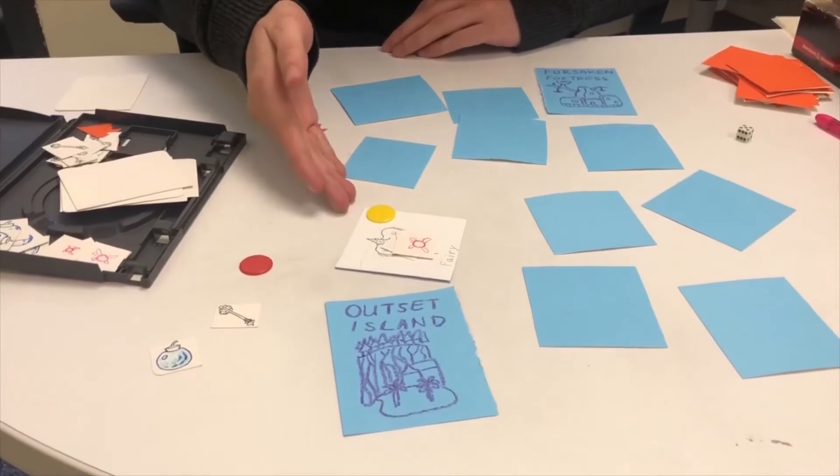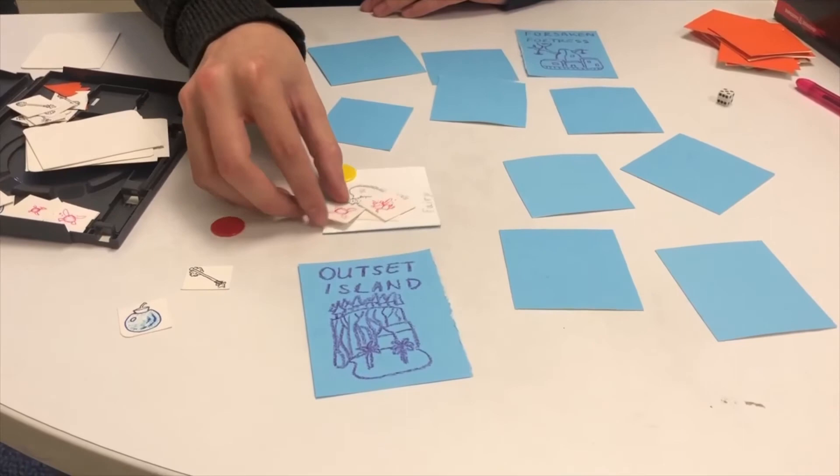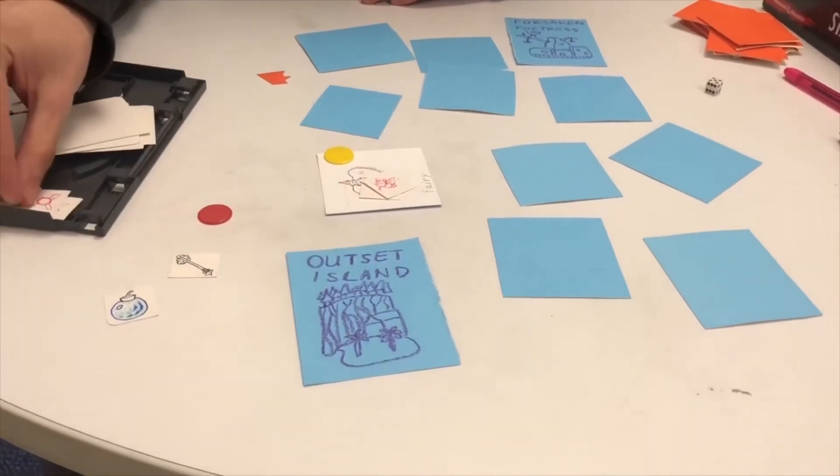If you're standing on a fairy island with fairy tokens on it, you can discard one fairy token from the island to reset to full health.